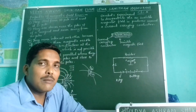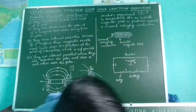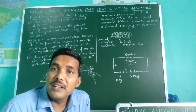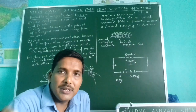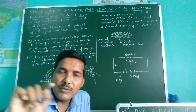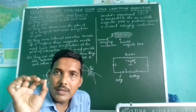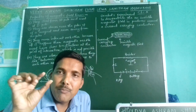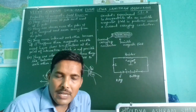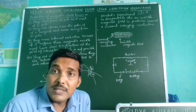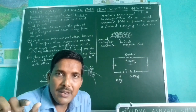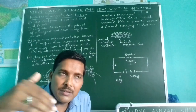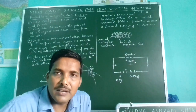So Oersted's experiment can be stated as: if current is passing through any conductor, then an invisible magnetic field is produced around it. To demonstrate this, we make an electric circuit with a wire, a resistor, a switch, and a battery. We place a magnetic needle just near and just below the conductor. As soon as the current is allowed to pass through the circuit, there is a deflection in the magnetic needle, but as soon as the current is stopped, the magnetic deflection is also stopped. This shows that the magnetic field is created due to current passing through the wire.